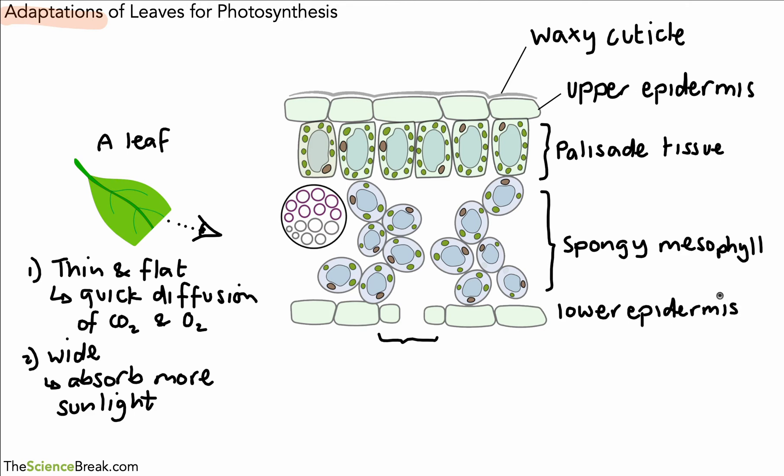Then we have the lower epidermis. And then this part here that's in the lower epidermis, this is called a stoma. If you have more than one stoma, or you're talking about more than one stoma, we use the word stomata. So one stoma, many stomata. So these are the parts that we should be able to label and explain what they're about.